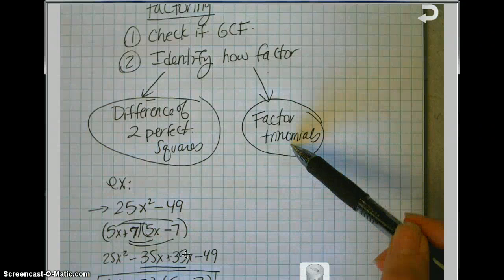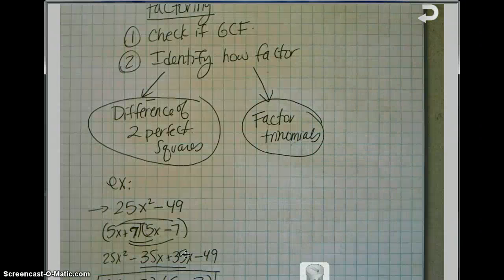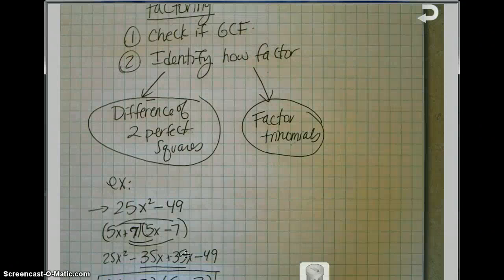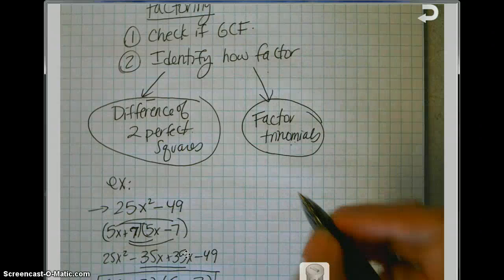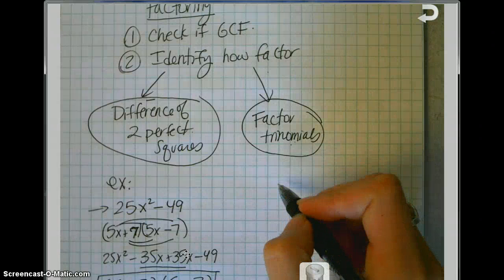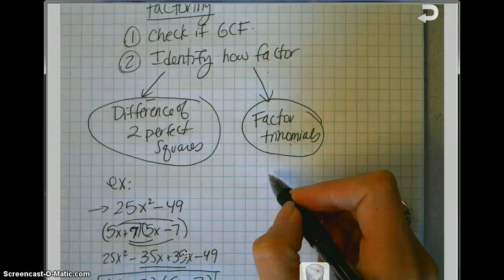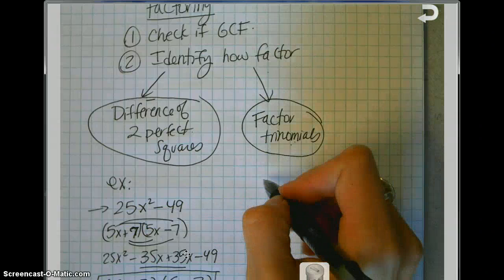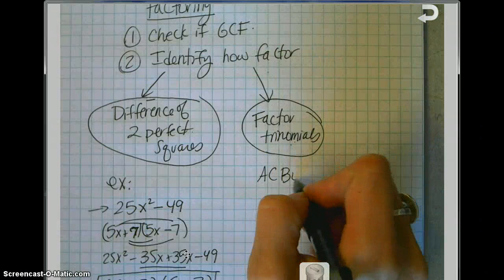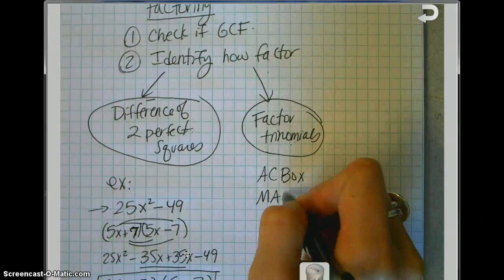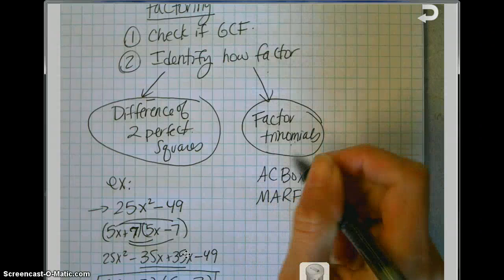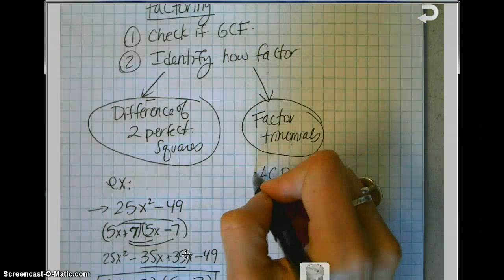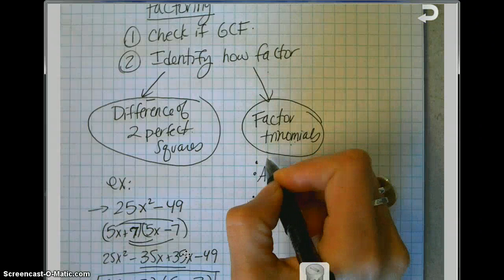The third thing would be to see if it's a trinomial. We talked on the previous video about just guessing and checking to find out what the final answers are. As long as your answer foils back to get to the original problem, you did a great job. If you had Ms. Barr, Mrs. House, Mr. Moroney, or me for a teacher before, you might have talked about something called the AC box or MARF — another, longer way to do the guess and check.